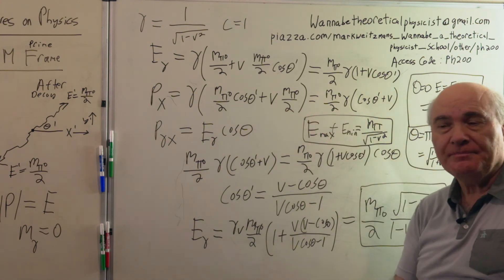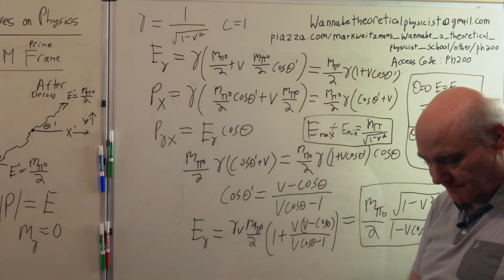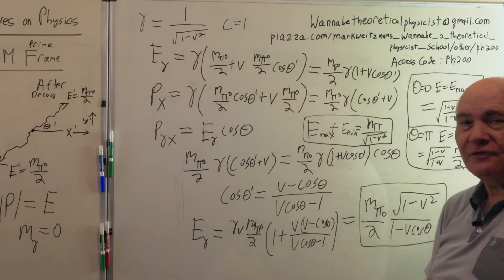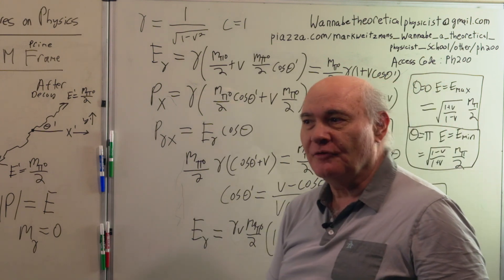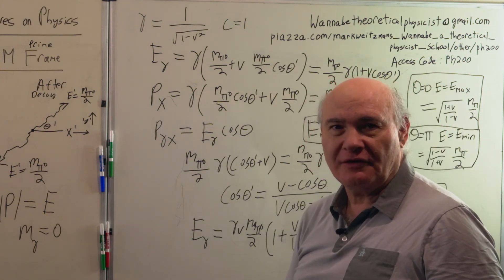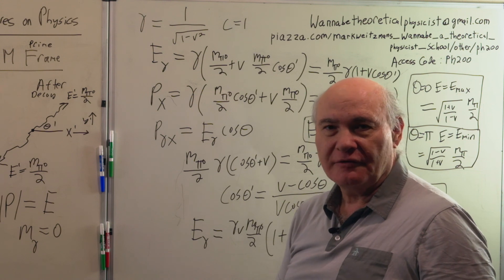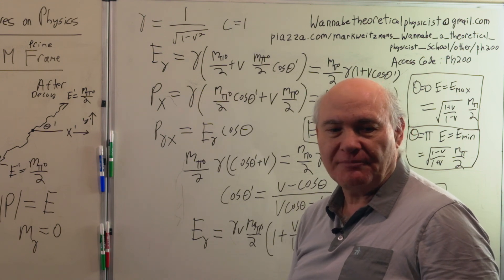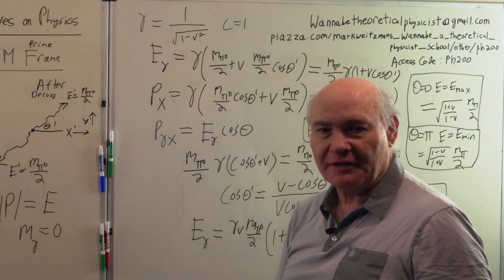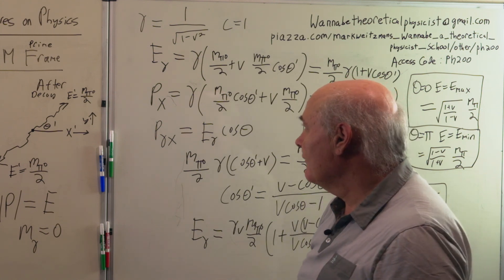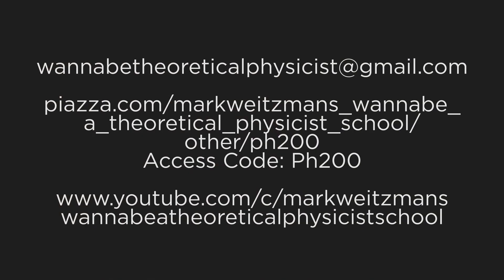So that's the end of these exercises in the Feynman lectures for special relativity. There are some more exercises in Jackson's book on classical electrodynamics — a graduate level textbook — which has a whole chapter with kinematic problems on collisions, and I recommend you look at those. I can be reached at the addresses on Piazza or at gmail.com. Thank you very much.